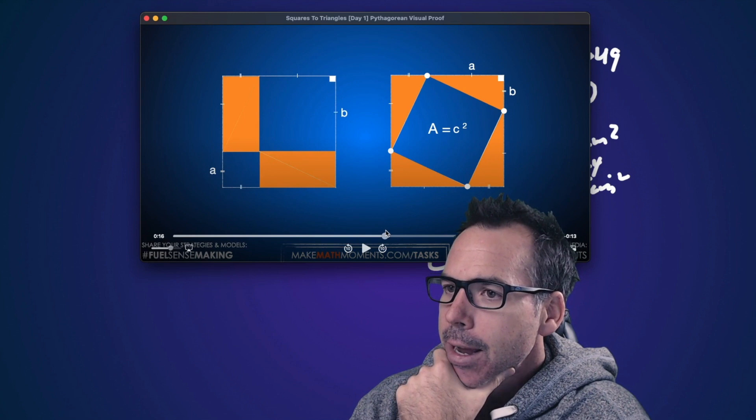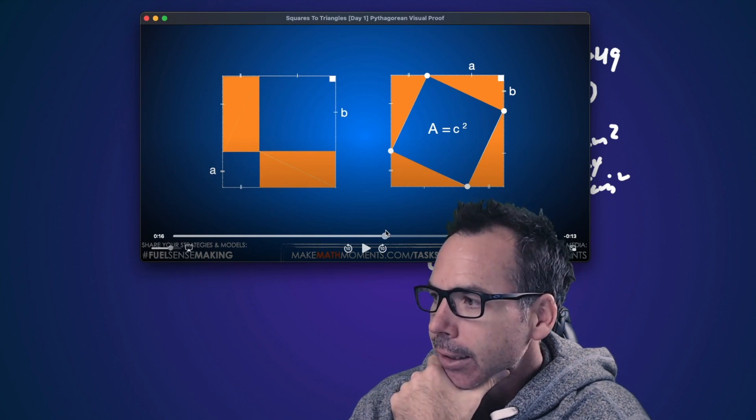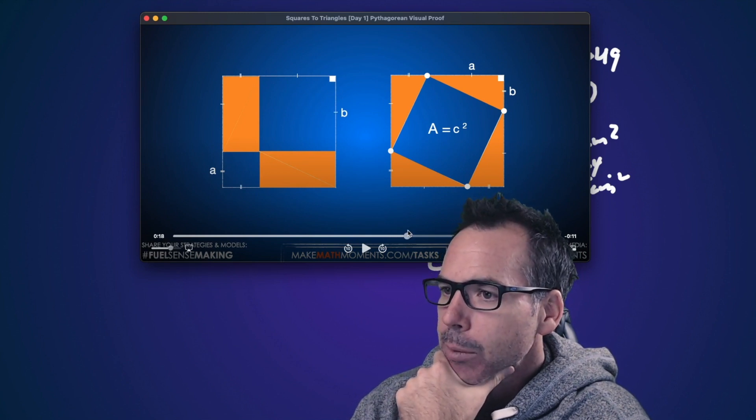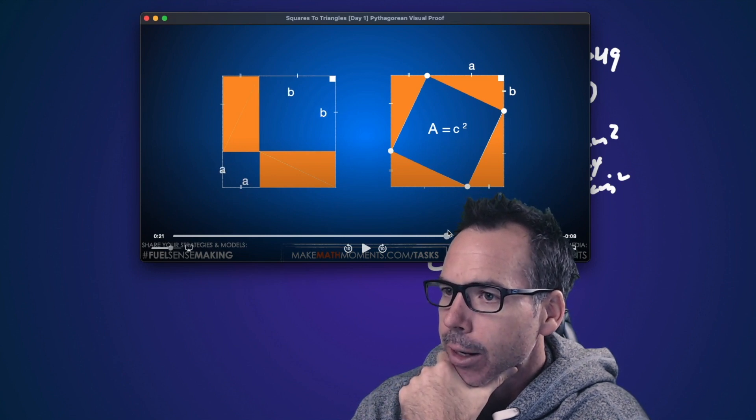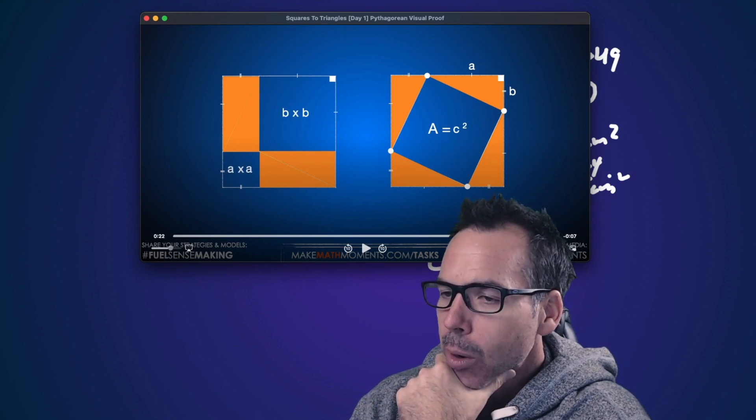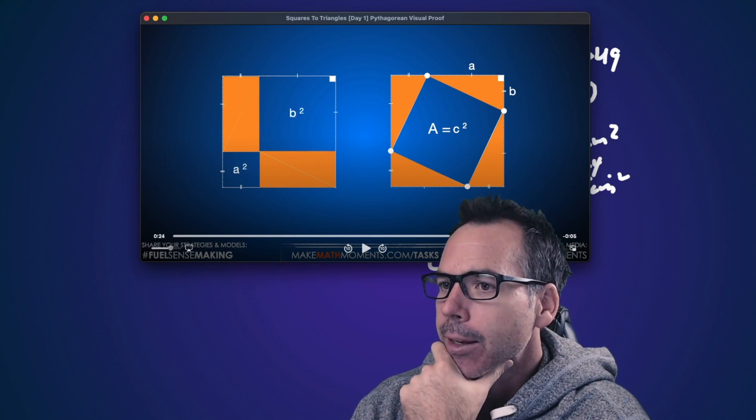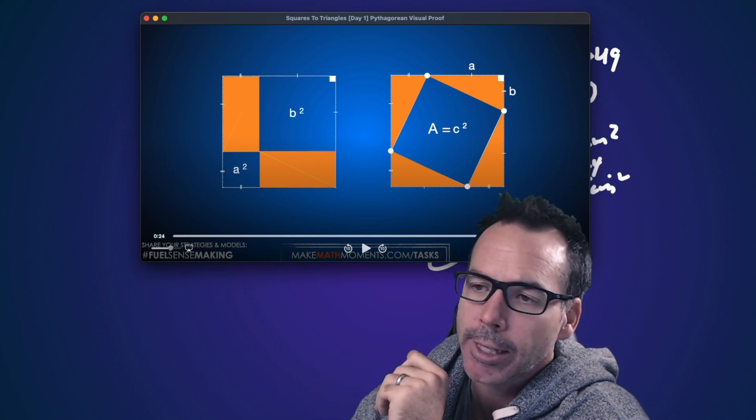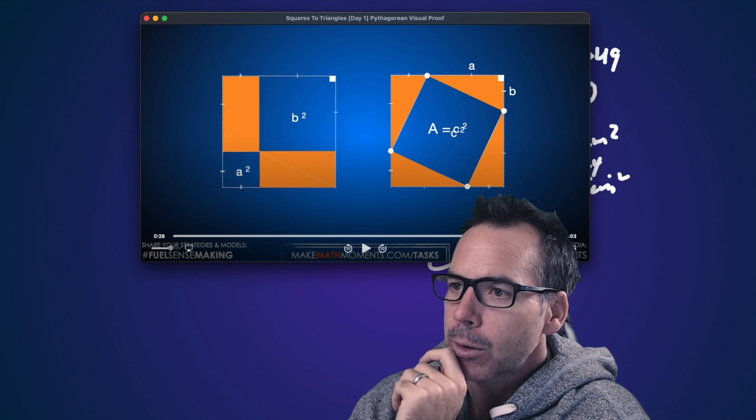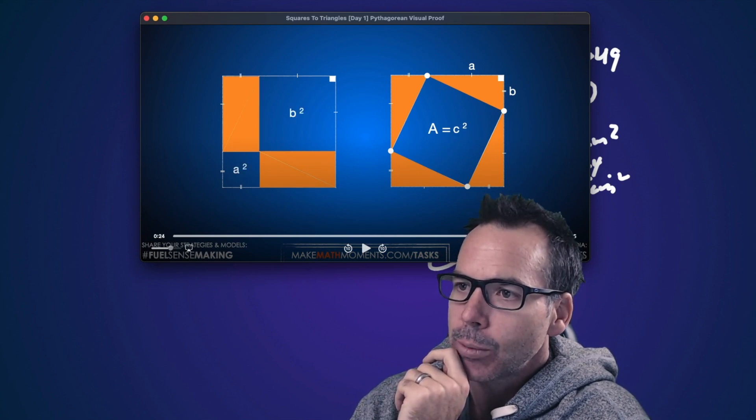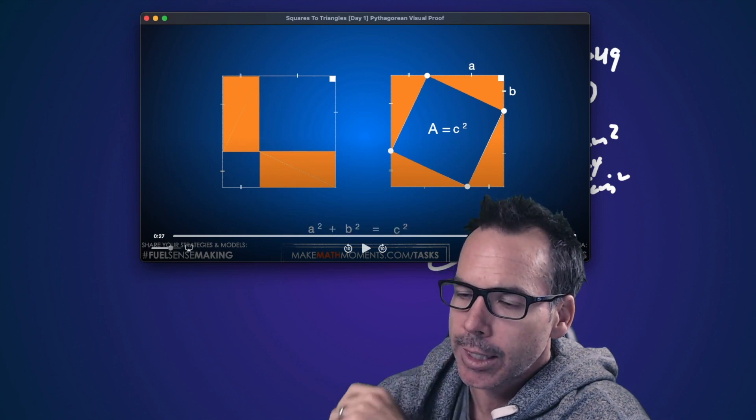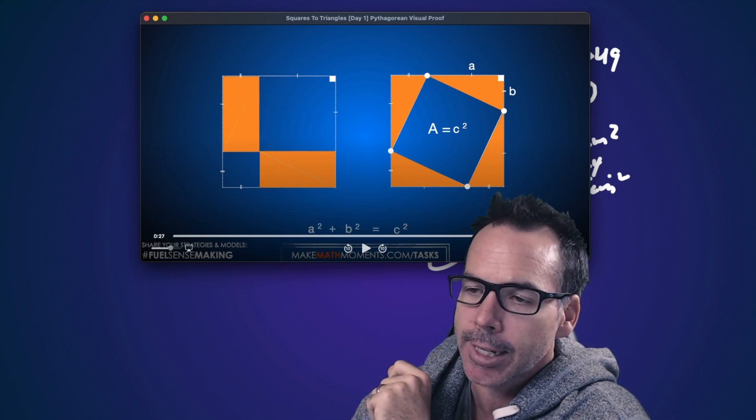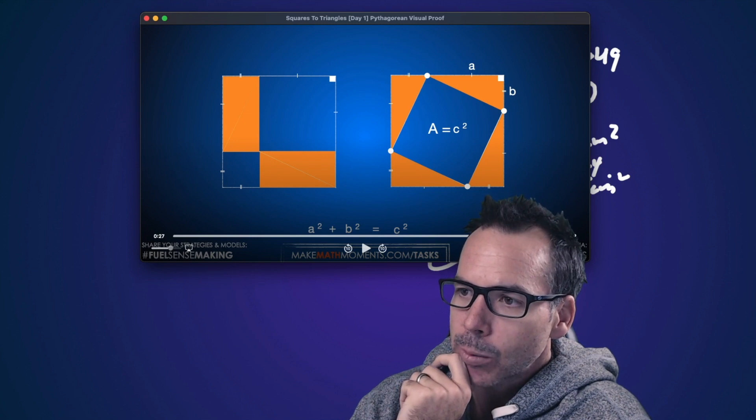But now you can clearly see that the big area left on the left is B times B, which is B squared. And we're taking the area there and squaring it, we get B squared. And then the small little area is A squared, A times A, just from the rearrangement of those triangles. And that can clearly show that the two areas are the same. And hey, maybe we've developed a little shortcut here that these two squares on the sides is equal to the big square as well.